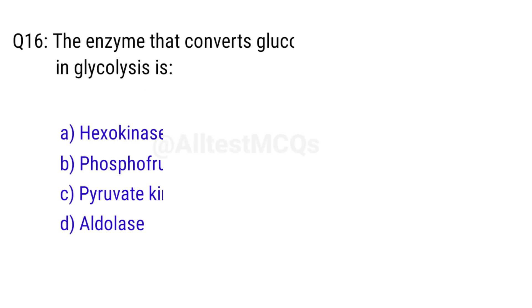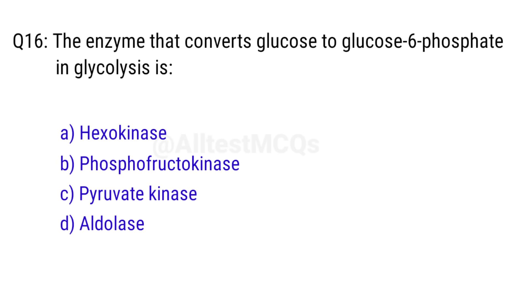Q16. The enzyme that converts glucose to glucose-6-phosphate in glycolysis is? Right answer is option A, hexokinase.